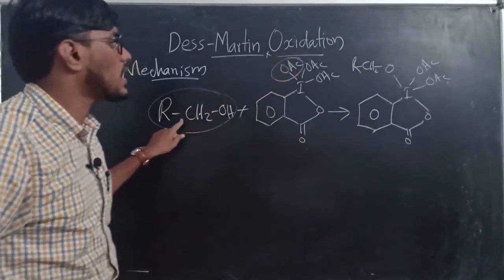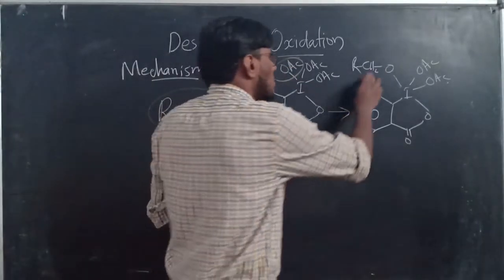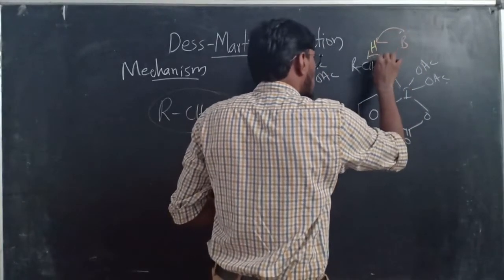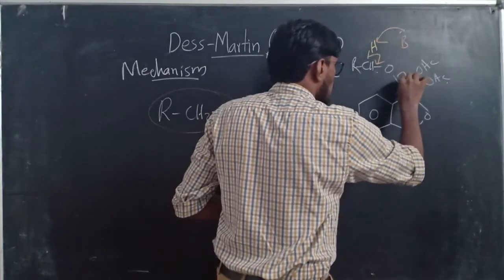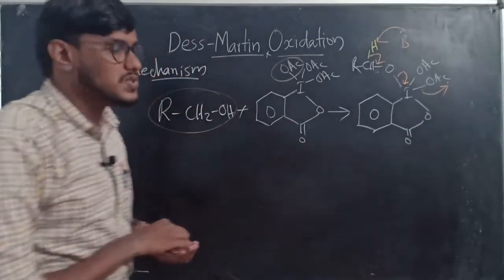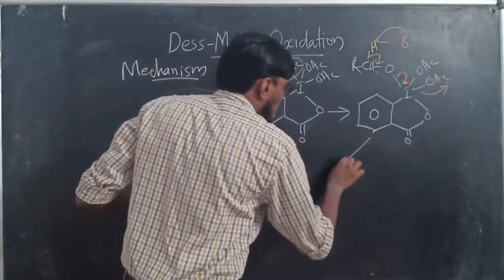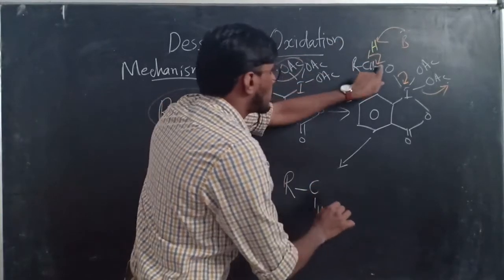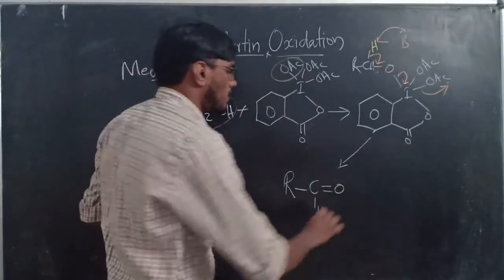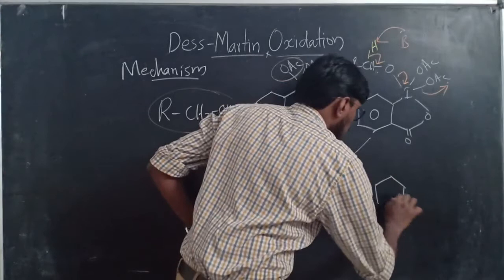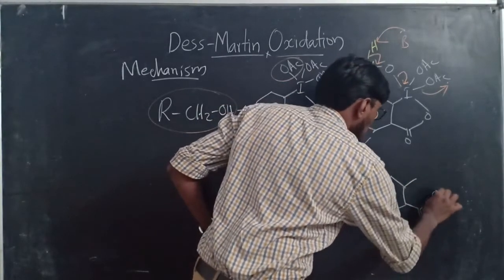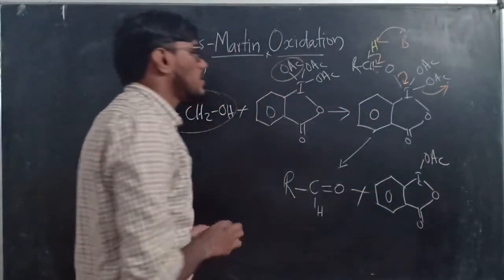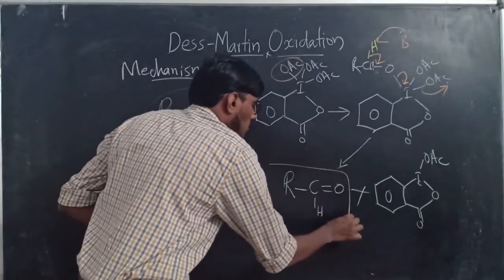In the next step, a base comes in and abstracts the proton from the carbon bearing the oxygen. This bond shifts and one of the acetate groups leaves. The product formed is an aldehyde — RCHO — and the iodine byproduct retains one OAc group after the elimination.